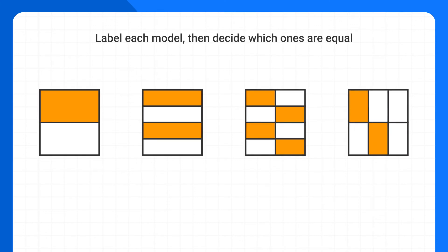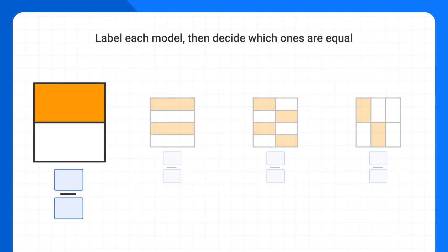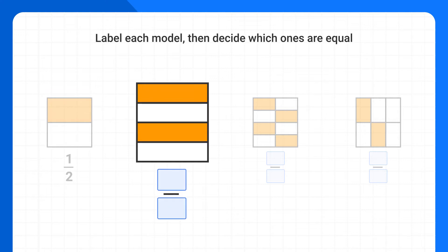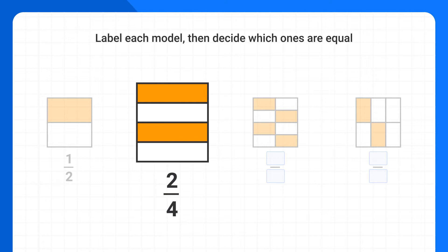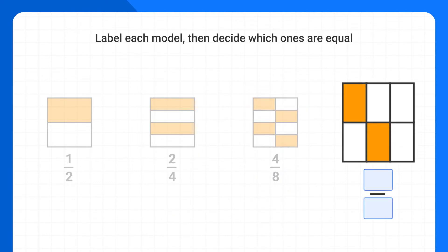To start, we're going to label each of the models. This first model is the fraction one-half. The second model has two shaded pieces out of a total of four, so it's two-fourths. This model is four-eighths, and this last model is two-sixths.